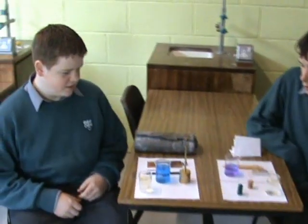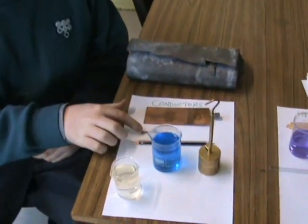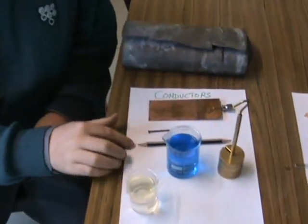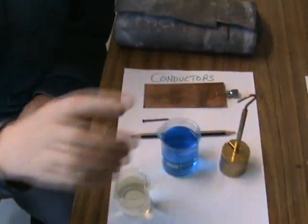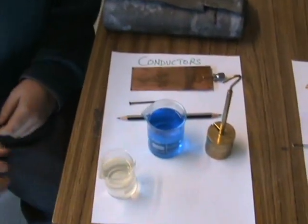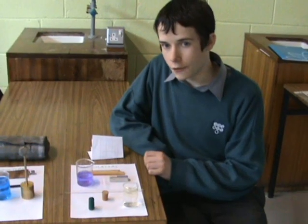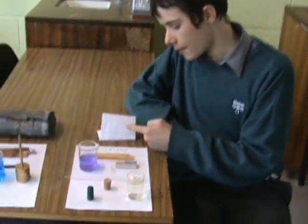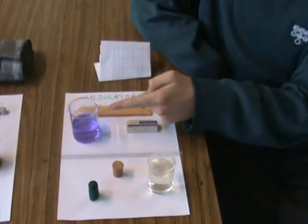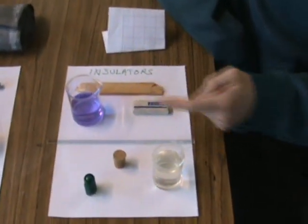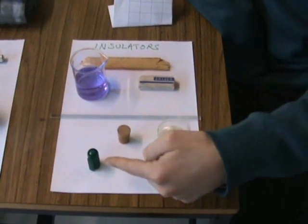These are conductors: lead, copper, steel nail, graphite, copper sulfate solution, brass, and salt water. The following are insulators: paper, wood, rubber, methylated spirits, glass, pure water, cork, and plastic.